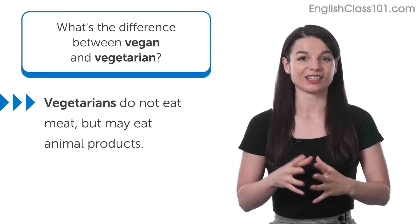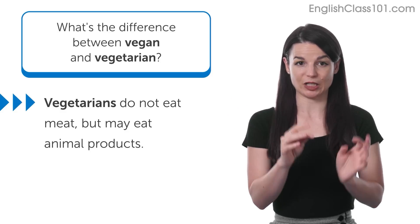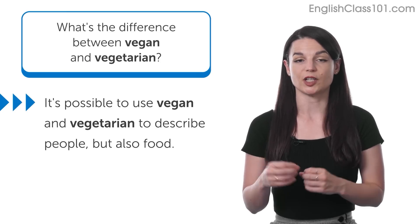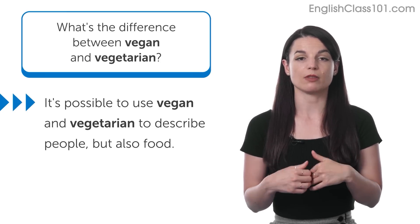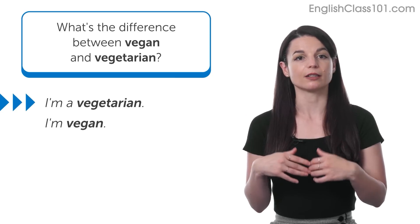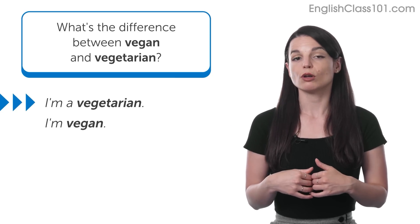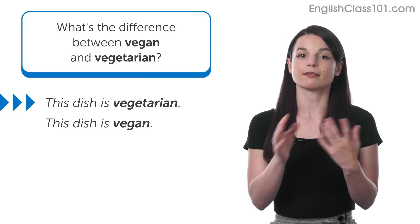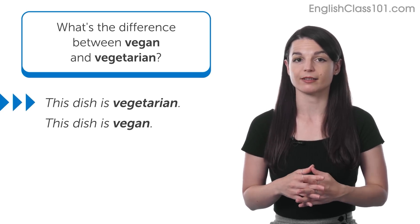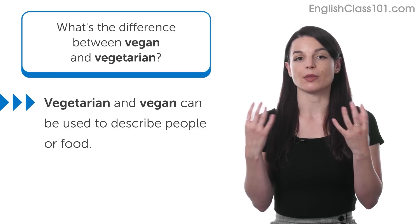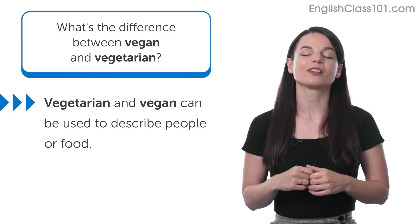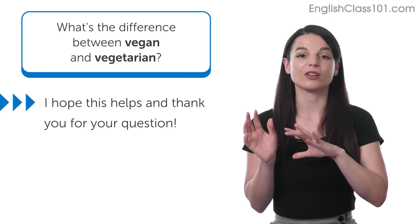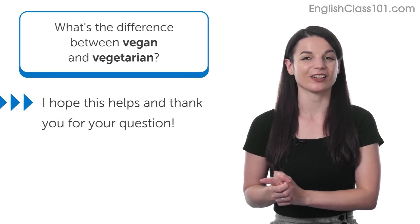So this is the simplest breakdown of the differences between vegan and vegetarian. One last point: it's possible to use 'vegan' and 'vegetarian' to describe both people and the food that we eat. So I could say 'I'm a vegetarian' or 'I'm a vegan.' You could also say 'this dish is vegetarian' or 'this dish is vegan.' So we can use these words to talk about the person's choices or to talk about the foods that we eat. I hope this helps you understand the differences between vegan and vegetarian. Thanks very much for sending this question.